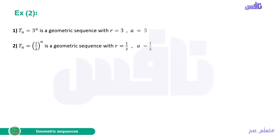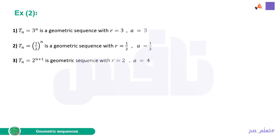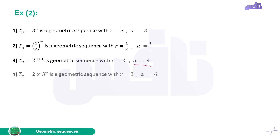For Tn = (1/2)^n, R equals 1/2. For Tn = 2^(n+1), R equals 2 (the base). To find A, substitute n=1: exponent becomes 1+1=2, so 2^2 equals 4. Therefore A equals 4.